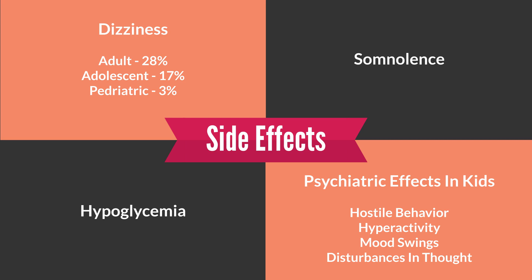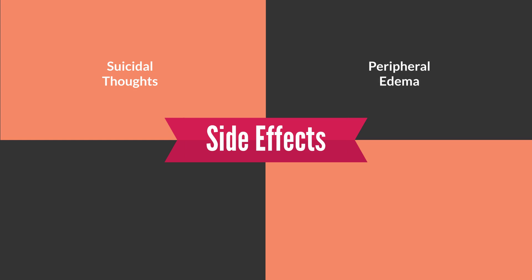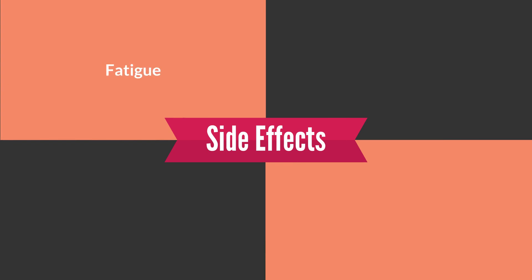Psychiatric side effects in children include hostile behavior, hyperactivity, mood swings, and disturbance in thoughts, occurring in around 5% of the pediatric population. This leads to suicidal ideation — some people tend to have suicidal thoughts. Other side effects include peripheral edema (fluid accumulation in the lower extremities), nausea and/or vomiting, fatigue or lethargy, and ataxia — a condition that mimics being drunk, with slurred speech, stumbling, falling, and incoordination. Some people may also experience breathing problems.